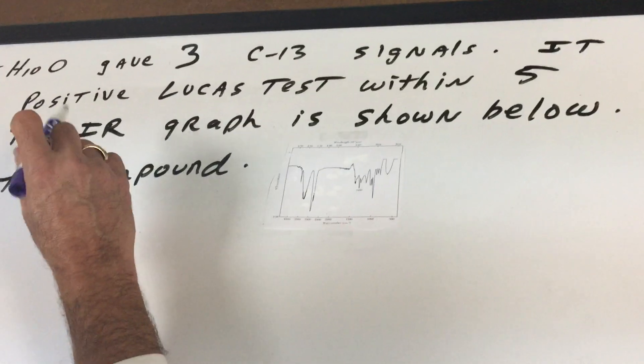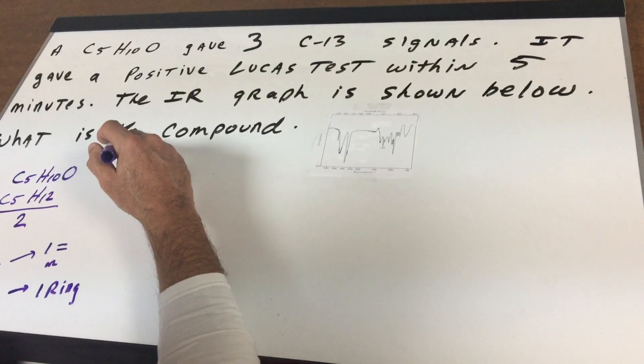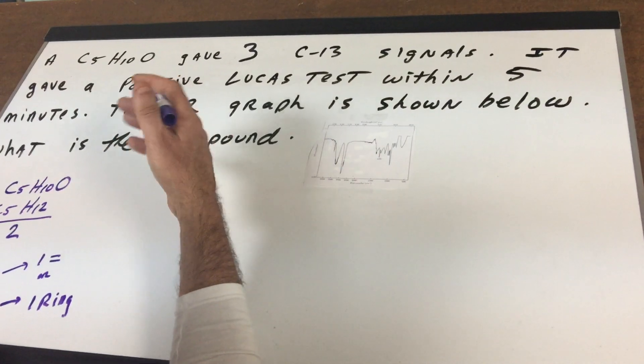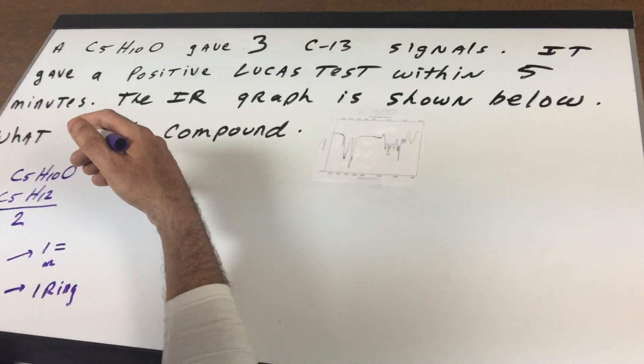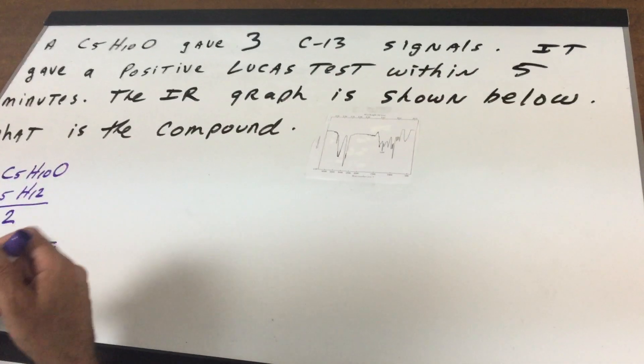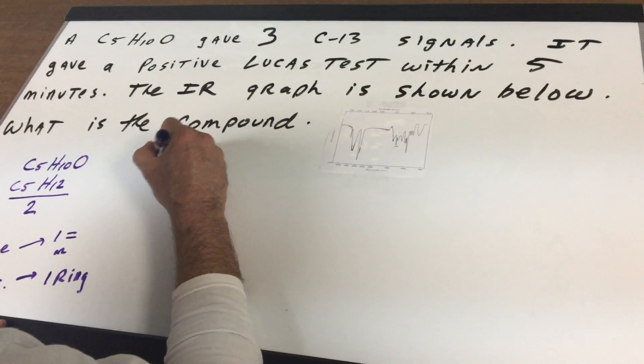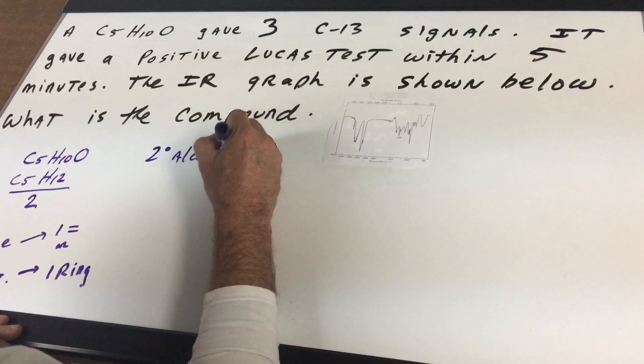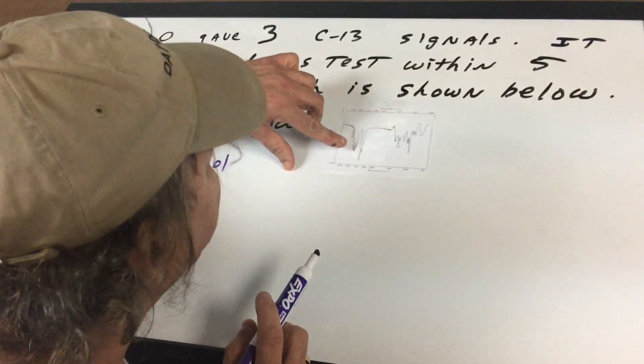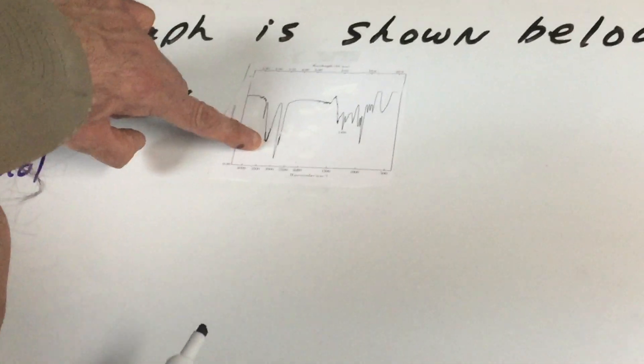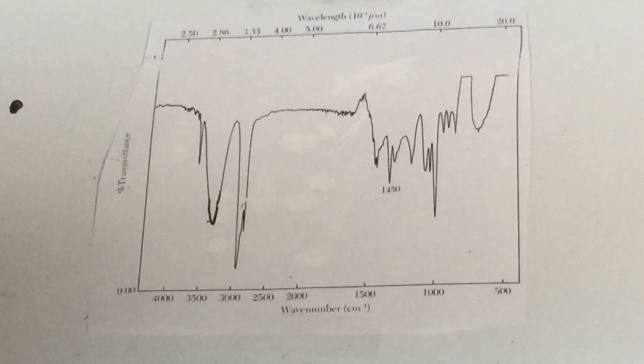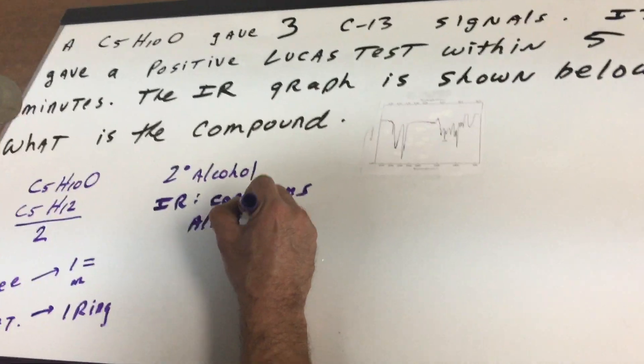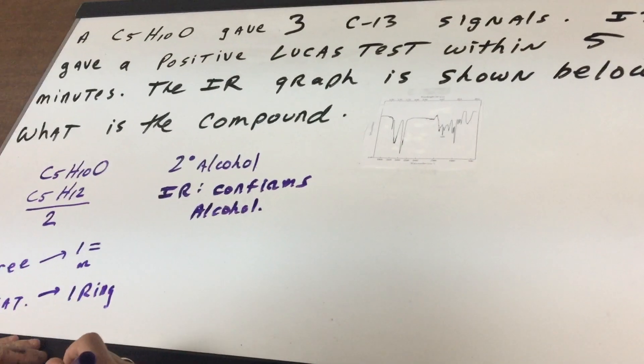It says that there is a positive Lucas test. Now the Lucas test was a test for alcohols. Primary, there's no test. Tertiary, you'll form a cloudy layer. You'll have two different layers. The solution gets cloudy within a few seconds. But this says it took within a few minutes. So I have a good suspicion that this is a secondary alcohol. And if you go to the IR graph, Alexandria, if you can move in a little bit, and you can see that big spike around 3400. The IR is confirming, confirms my suspicion of an alcohol.